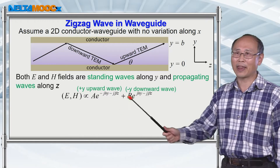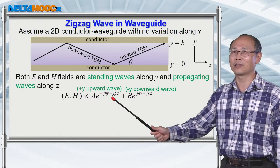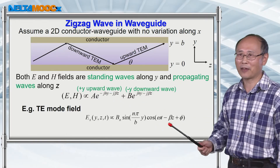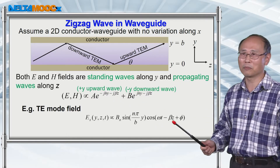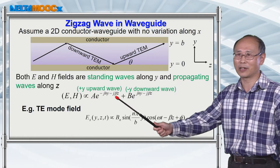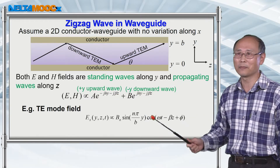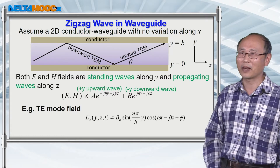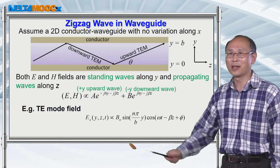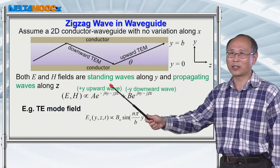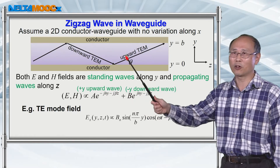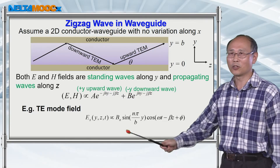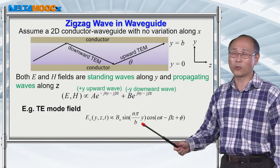If we just try to add these two terms together and synthesize the field inside such a structure, then you end up having a term propagating along the plus z direction, resulting from this exponential minus j beta z. We take the real part of this phasor field to get cosine(ωt − βz + φ). Along the y direction, because you have an upward propagating wave and also a downward propagating wave, you will be expecting a standing wave along the y direction.